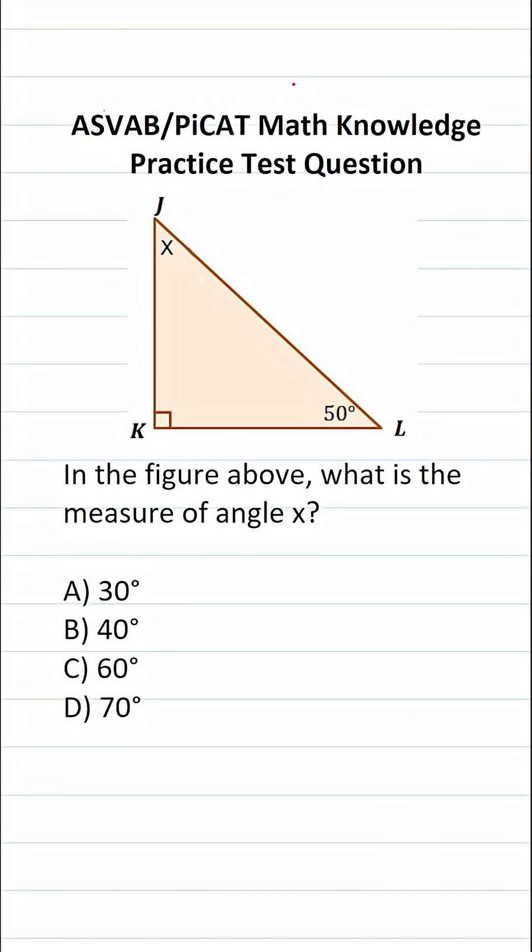So if we look at our figure, you can see that we have a right triangle. So we know that this angle is 90 degrees.